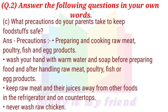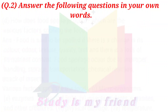c. What precautions do your parents take to keep foodstuff safe? Precautions: Preparing and cooking raw meat, poultry, fish and egg products. Wash your hands with warm water and soap before preparing food and after handling raw meat, poultry, fish or egg products. Keep raw meat and their juices away from other foods in the refrigerator and on countertops. Never wash raw chicken.